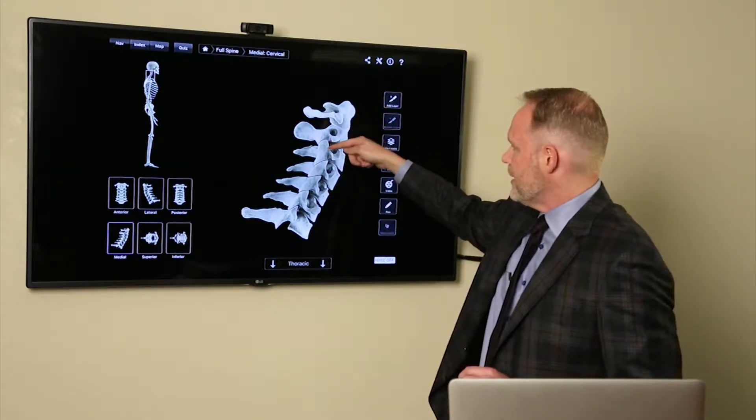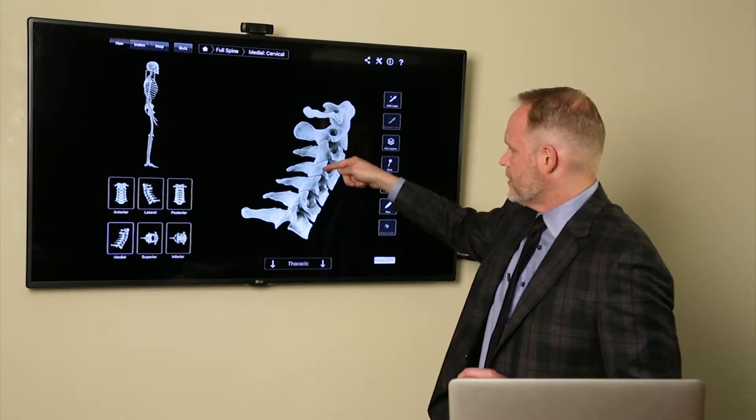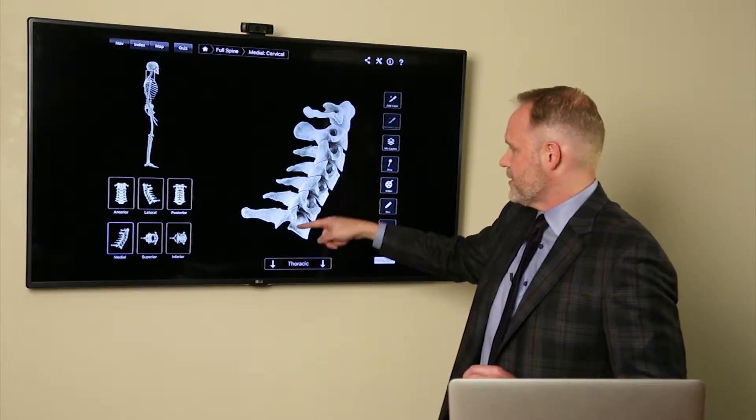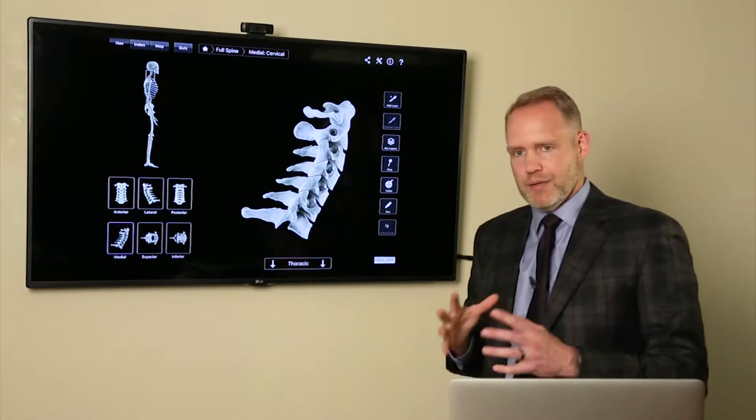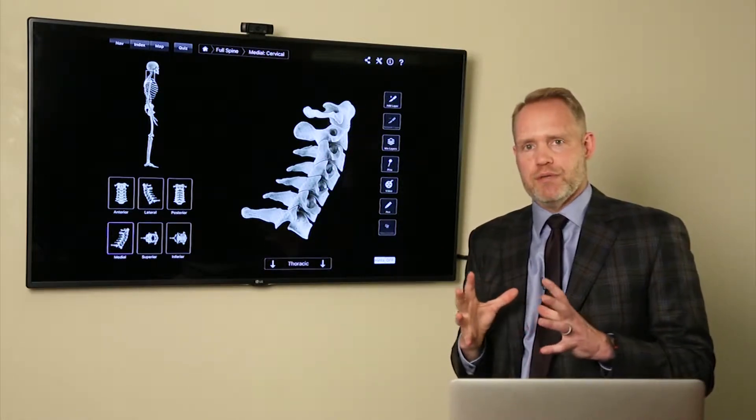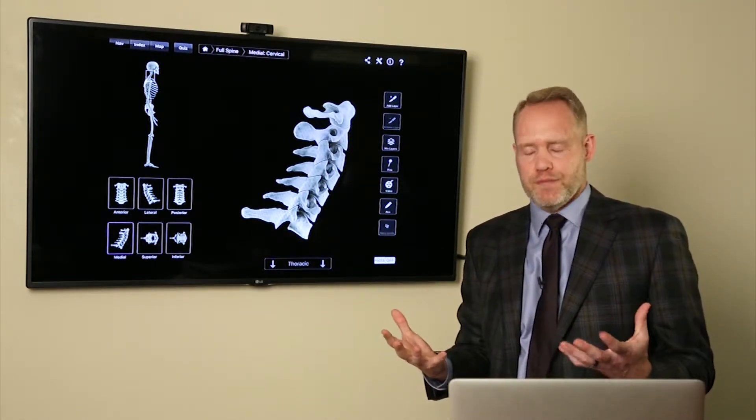You don't really have it on C1, but C2, C3, C4, C5, C6, C7. You can see there's a space there where each level is actually touching. Those are the facet joints.